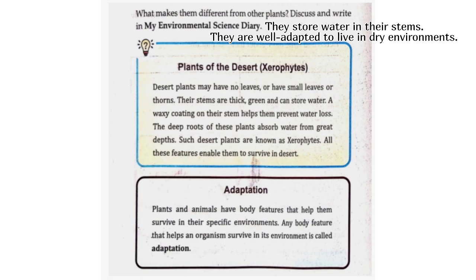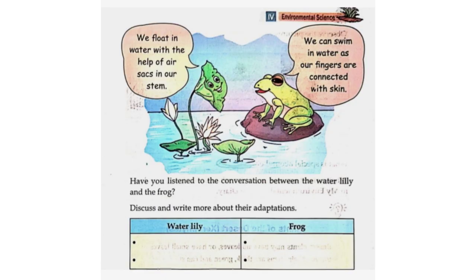Adaptation. Plants and animals have body features that help them survive in their specific environments. Any body feature that helps an organism survive in its environment is called adaptation. Have you listened to the conversation between the water lily and the frog? Yes. Discuss and write more about their adaptations.